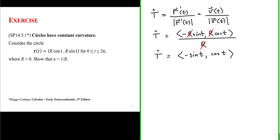Let's evaluate the derivative of this unit tangent vector with respect to the parameter t, because we'll need that to find the curvature. The derivative of the unit tangent vector is (-cos t, -sin t), found by differentiating the x and y components respectively.